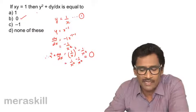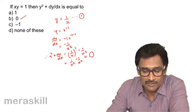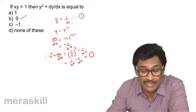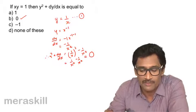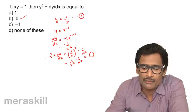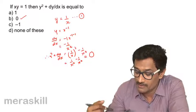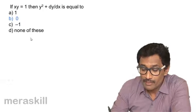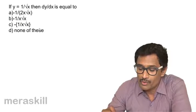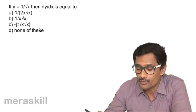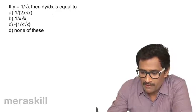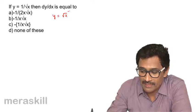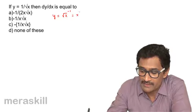Here we have learned one more thing: if it is an implicit function where it is not clearly indicated which variable is a function, we can convert it to an explicit function — y equals 1 by x. This can be done whenever the powers of x and y are generally 1; it becomes easier this way. Now, for y equal to 1 upon root x, to make things simpler, we can write it as x raised to minus half.